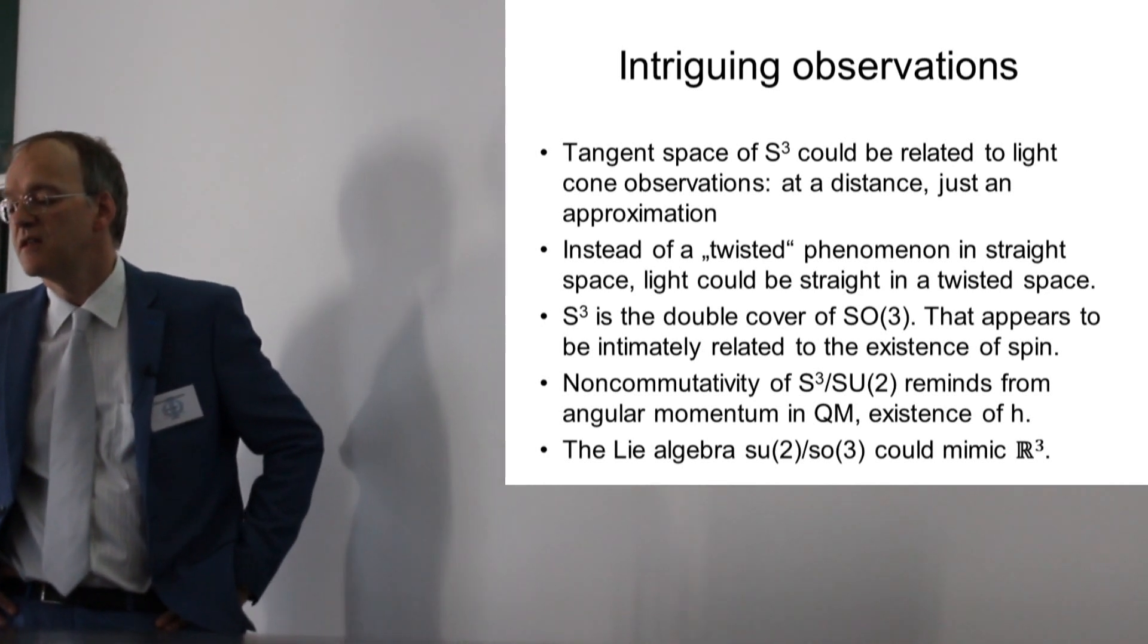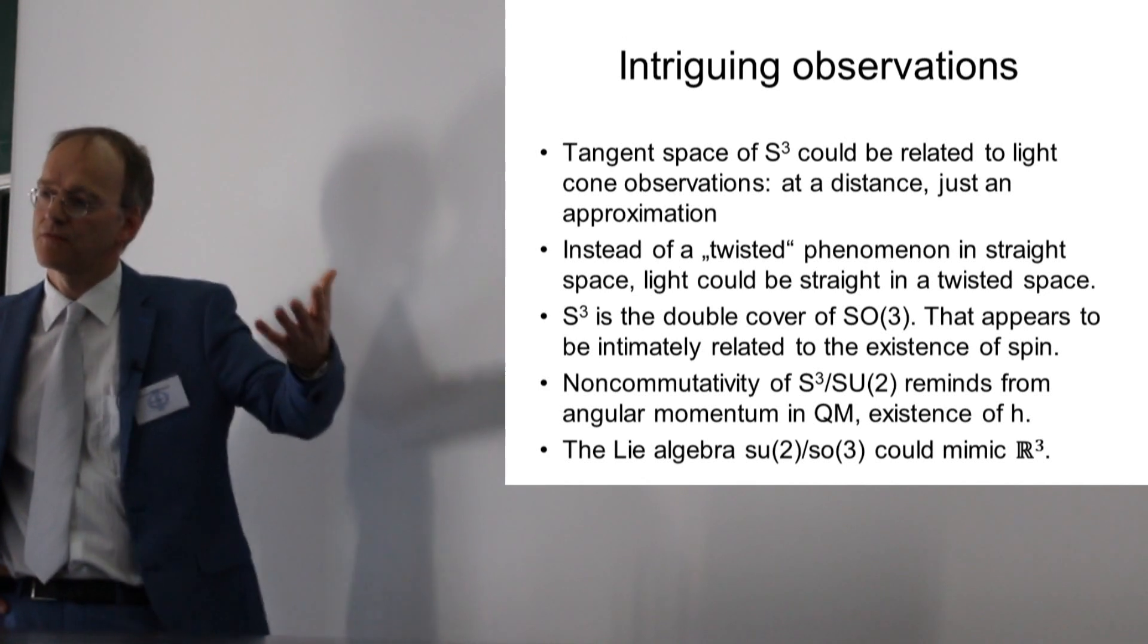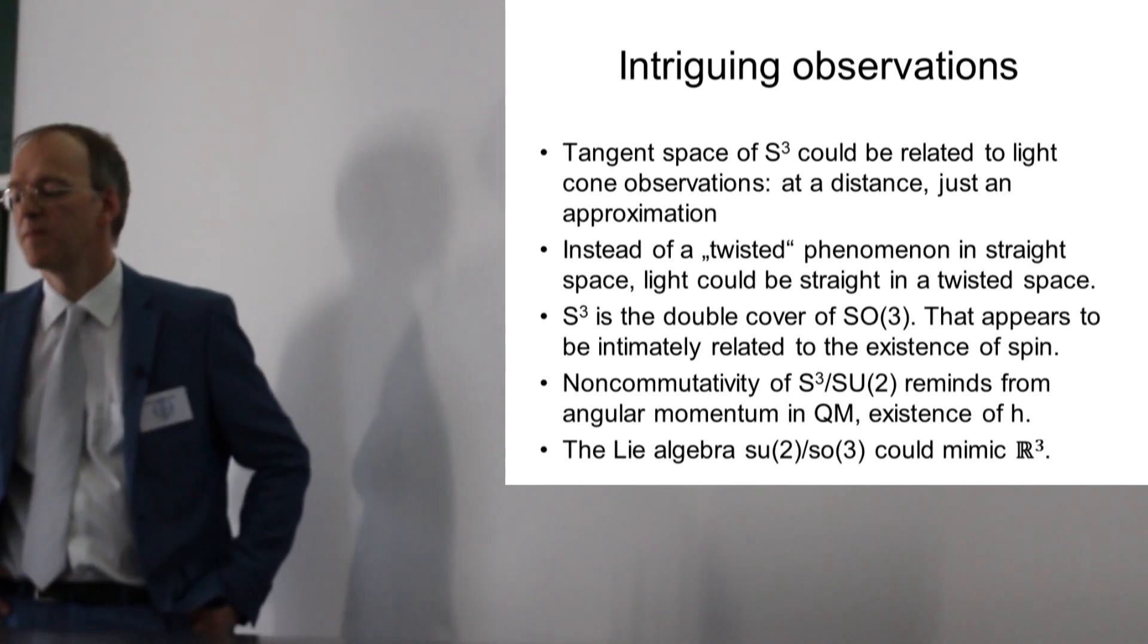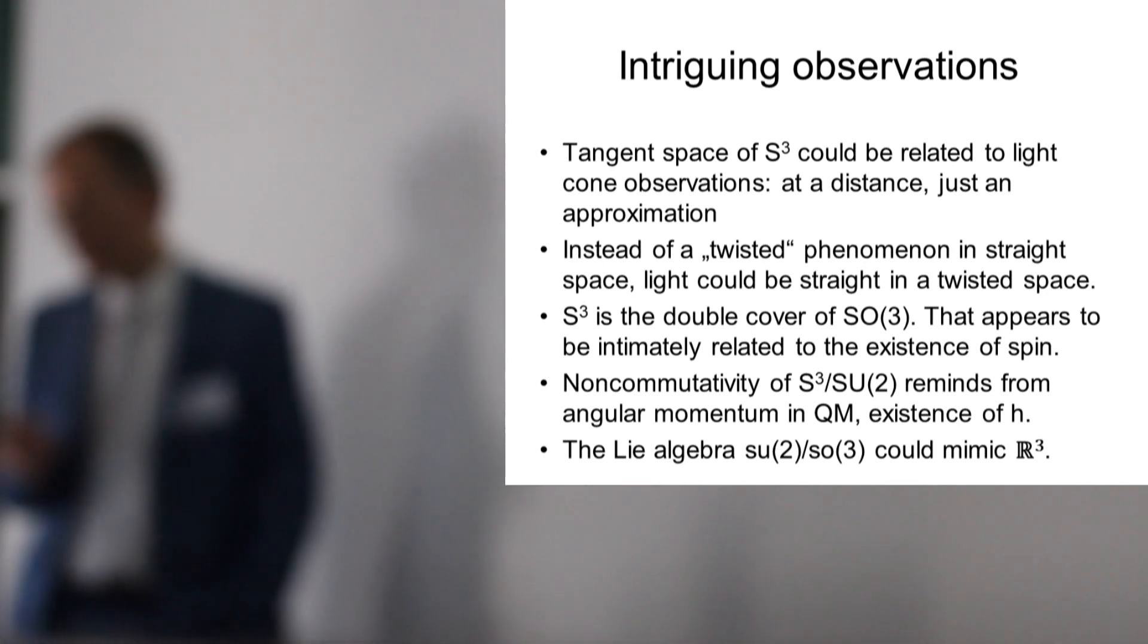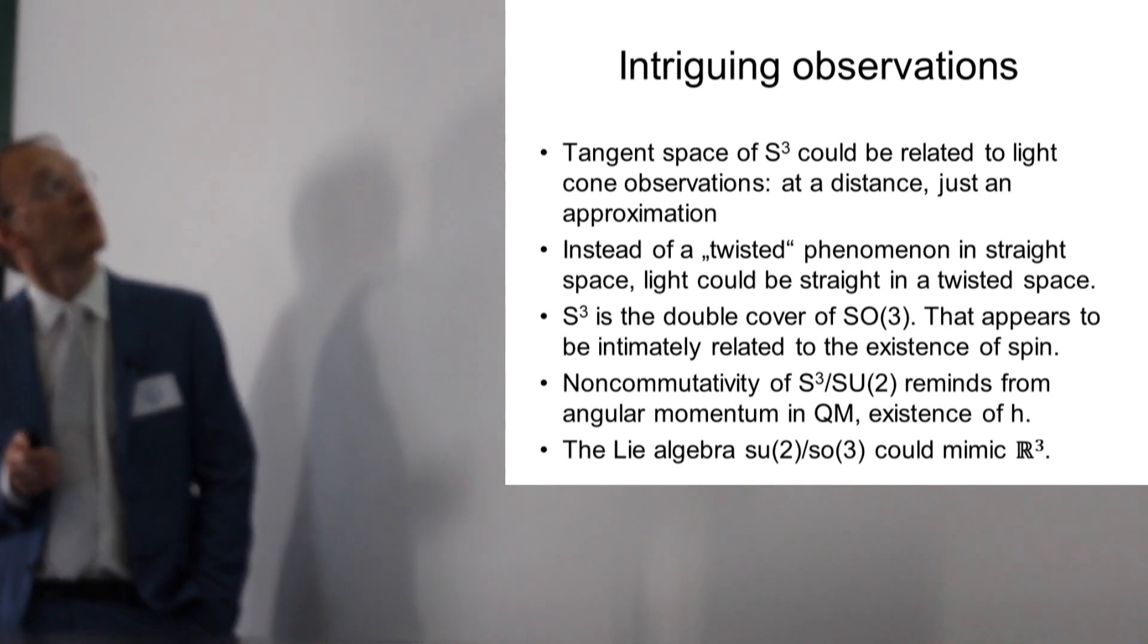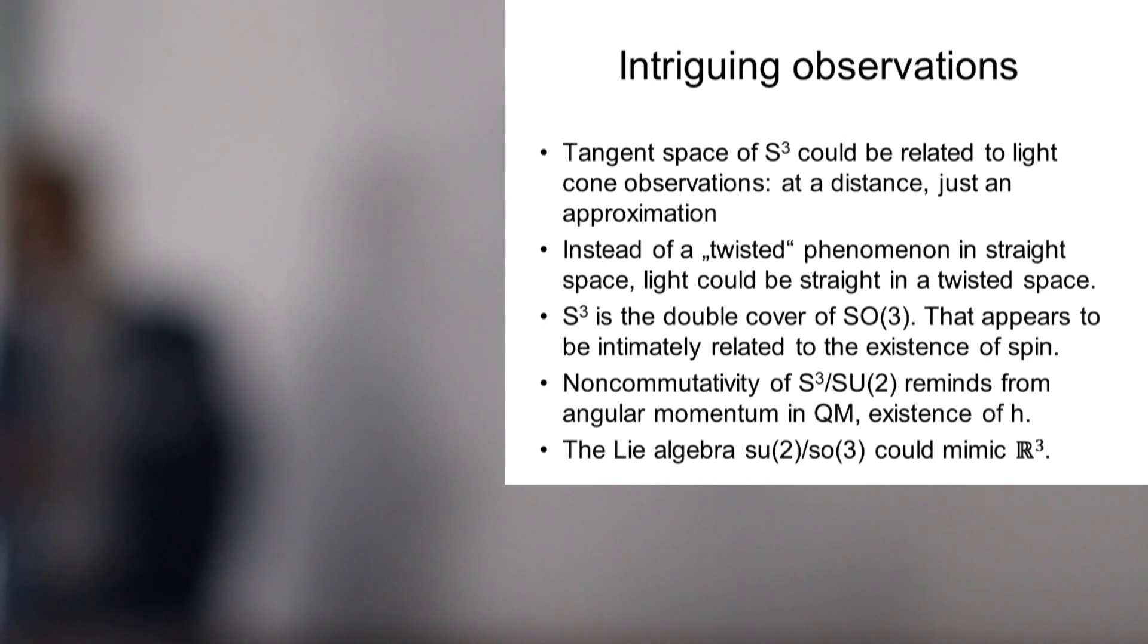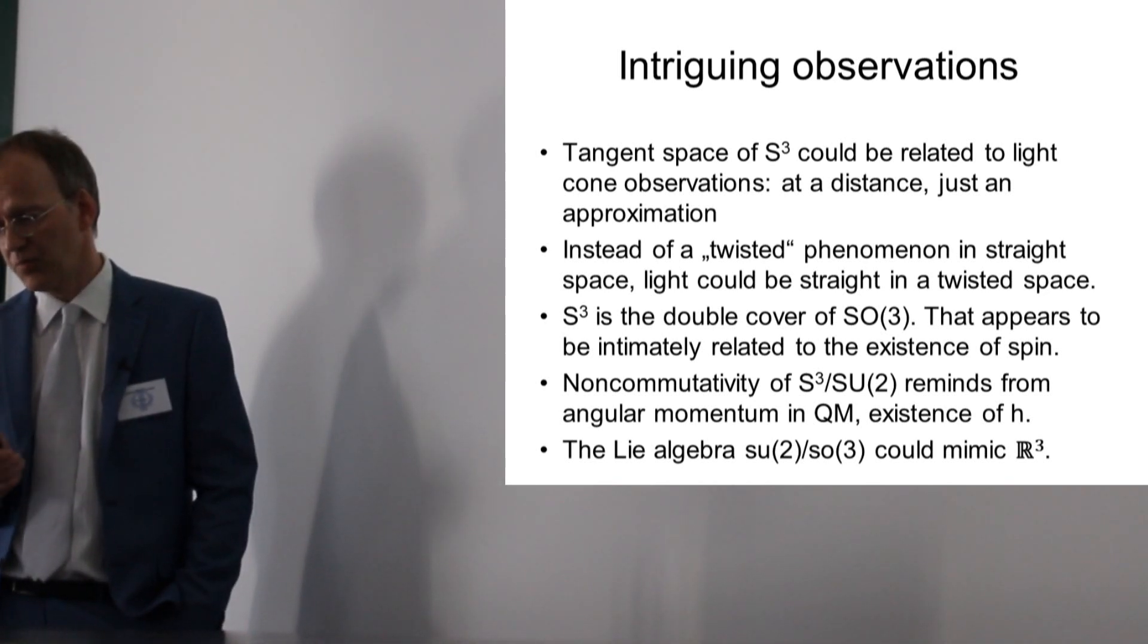There is no explanation that spin has to exist in physics as a fundamental concept. It comes from in a very natural way as a double cover of rotations in three-dimensional space. S3, or if you take the group SU2, has very interesting properties. It's not abelian, it does not commute. So it reminds you very much of the commutator relations in the angular momentum operators in quantum mechanics. This non-commutativity of S3 might be a reason for the existence of h. Interestingly, the Lie algebra, a kind of differentiation of the group, could mimic R3. It's a very similar structure to our usual three-dimensional space. The Lie group and Lie algebra would be related to the tangent space.